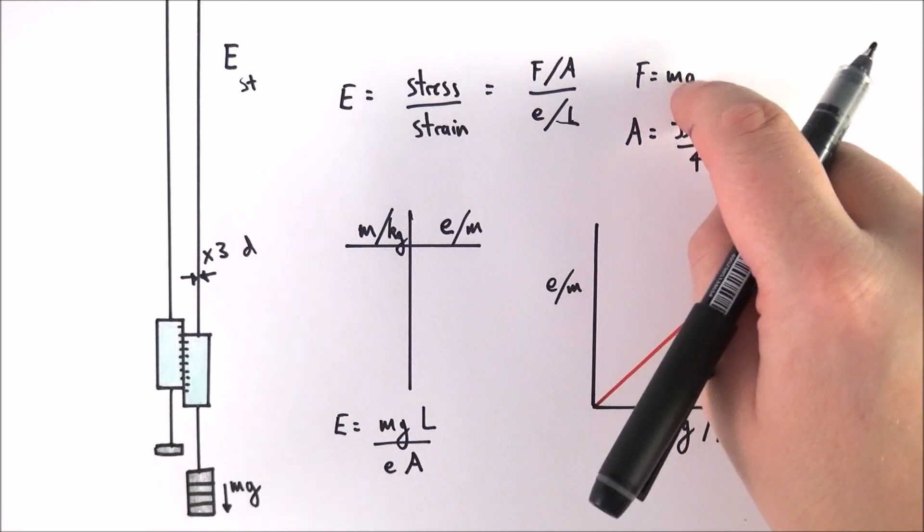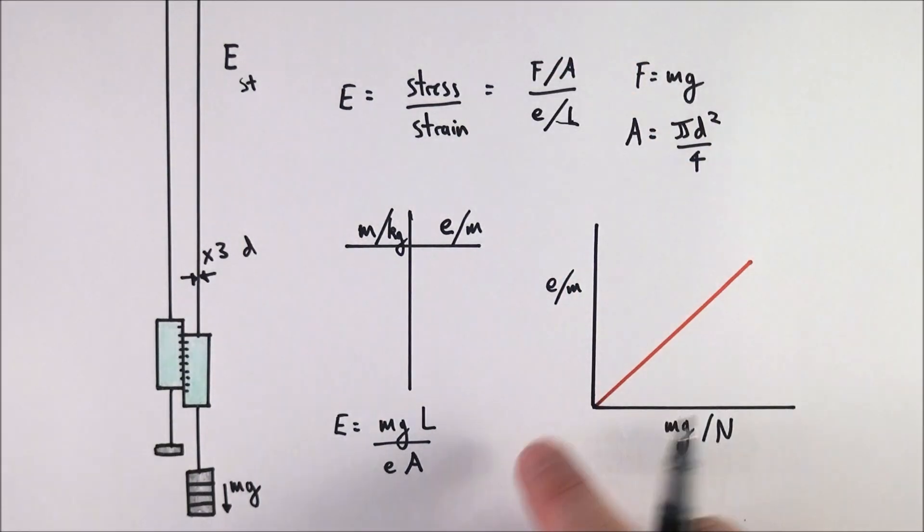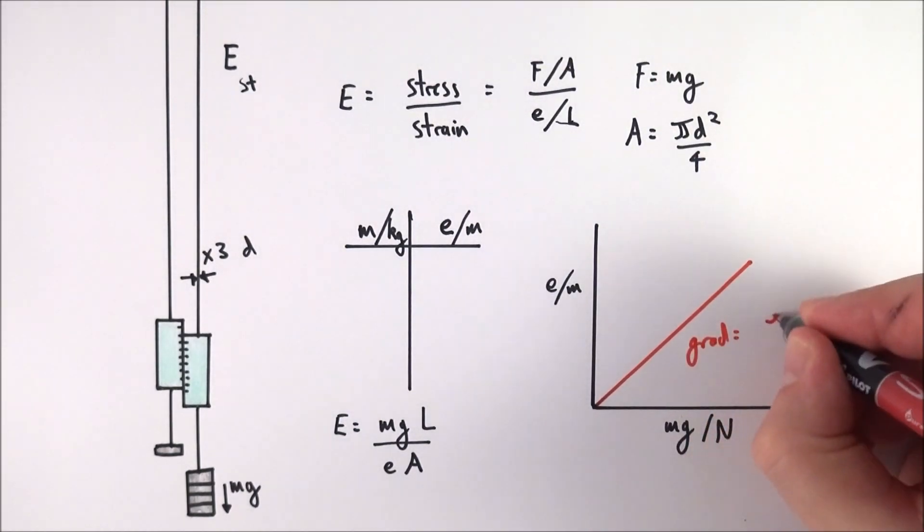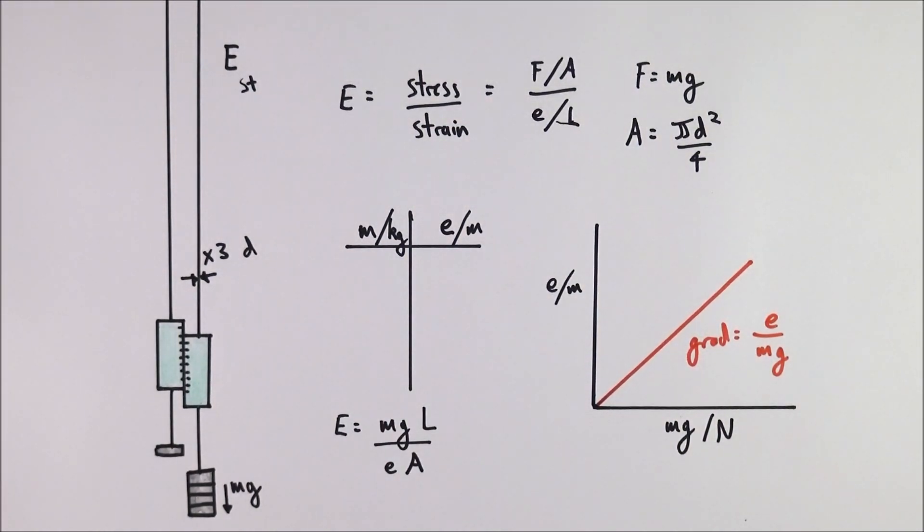What's that got to do with anything? Well, the gradient of this line is going to be equal to the extension over mg. But here we've got mg over E, and therefore we can also say that Young's modulus is equal to L divided by A multiplied by the gradient.